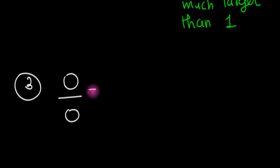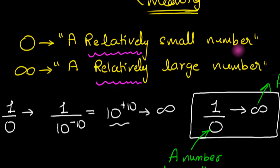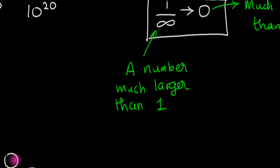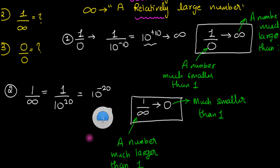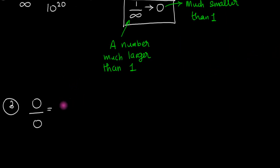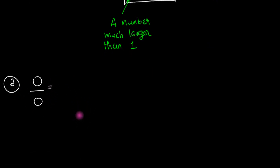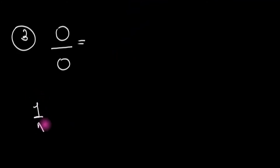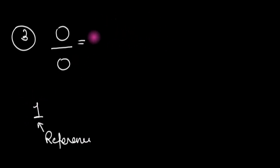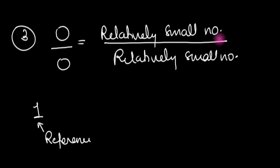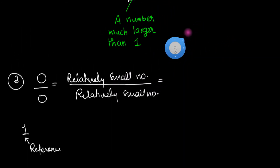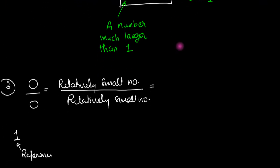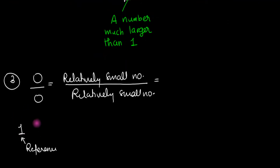According to our vocabulary, since 0 is a relatively small number, we don't have a reference in the numerator the way we did for the first two cases. But that's okay — we can write our own reference. We'll write 1 as our reference. The question now is: what happens if you take a relatively small number with respect to 1 and divide by another relatively small number? Can we get a generic answer like before — is the result much bigger, much smaller, or the same order as 1?